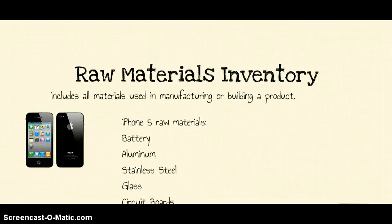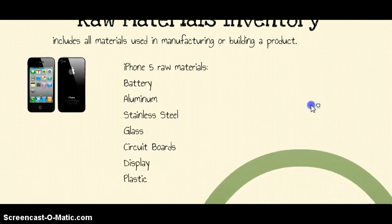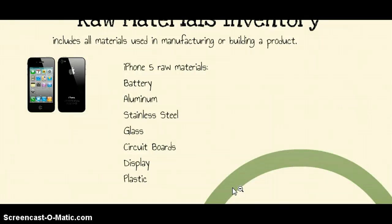Raw materials inventory includes all the materials used in manufacturing or building a product. Taking the iPhone 5 as our example, Apple uses batteries, aluminum, stainless steel, glass, circuit boards, display, and plastics to build their iPhone 5 — according to their website. All these items would be classified as raw materials, and they would have an account that keeps track of each individual item, such as inventory of batteries, aluminum, and stainless steel.